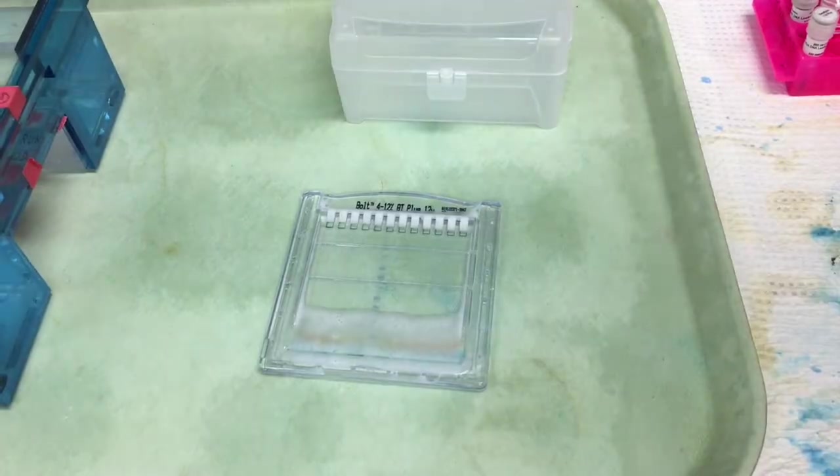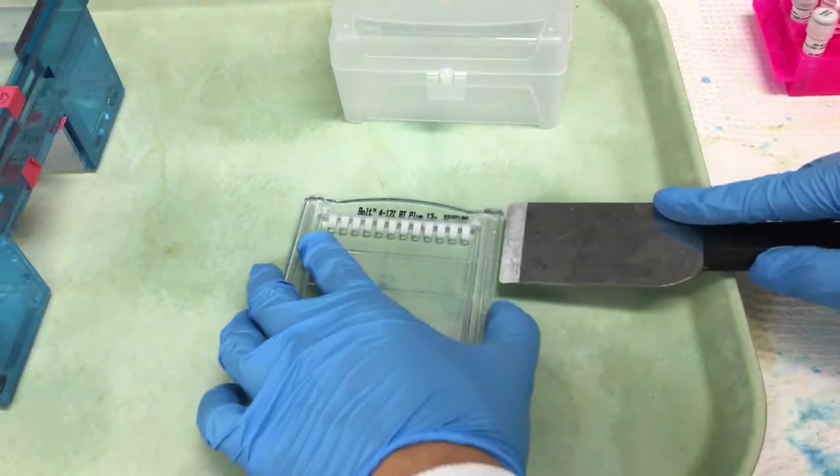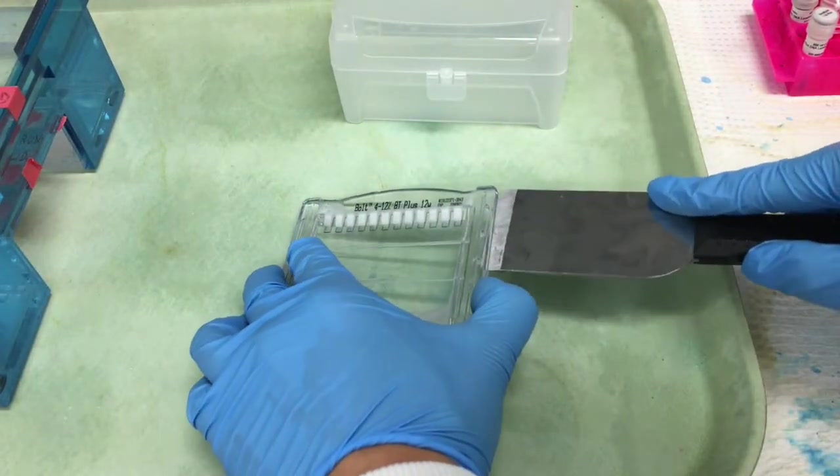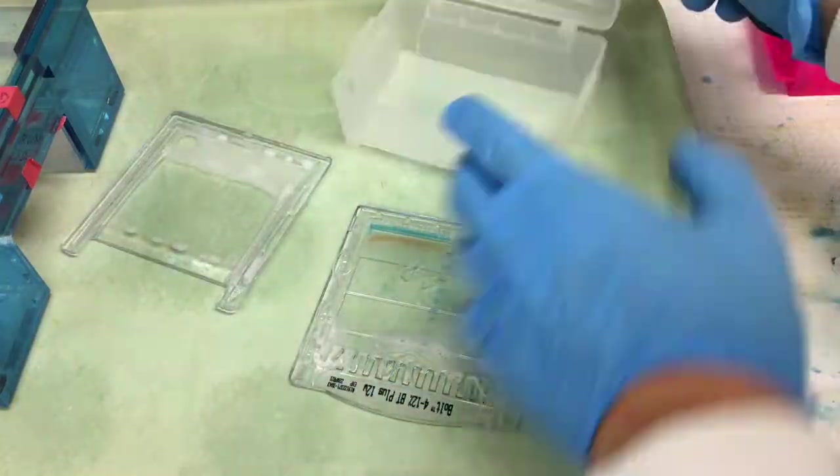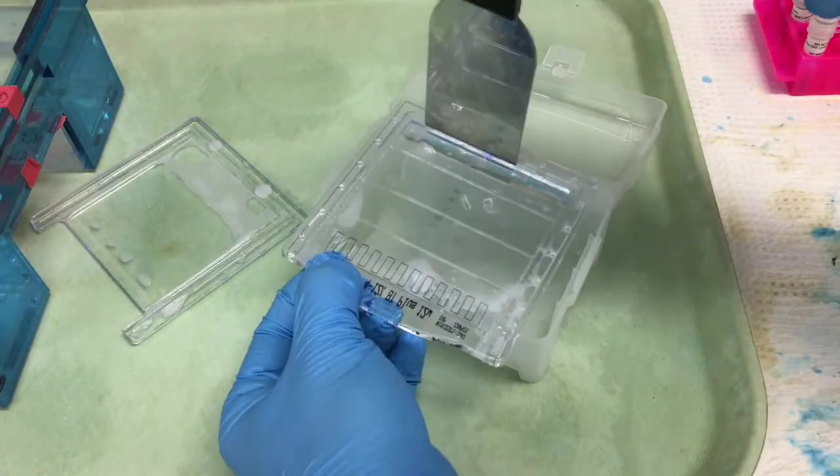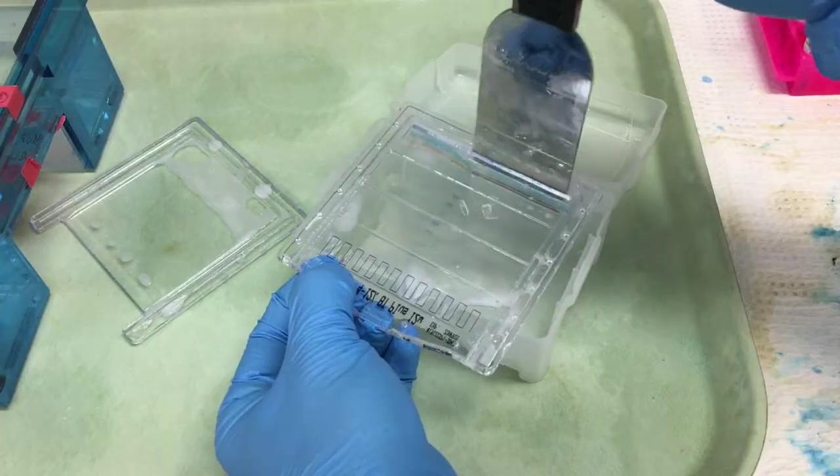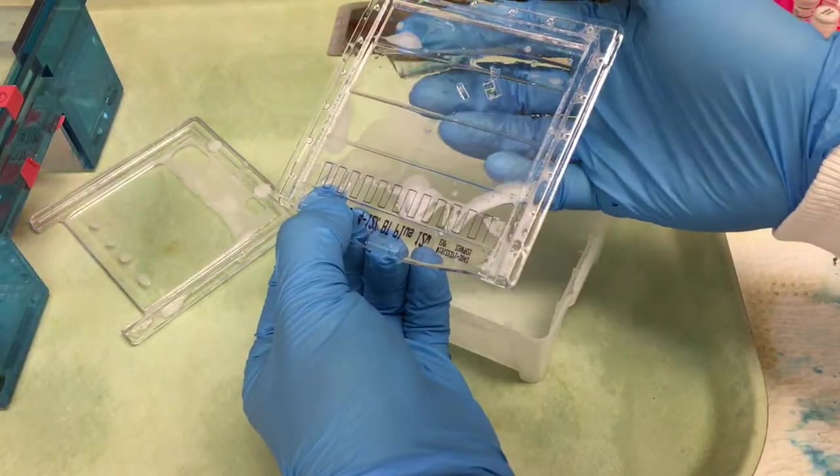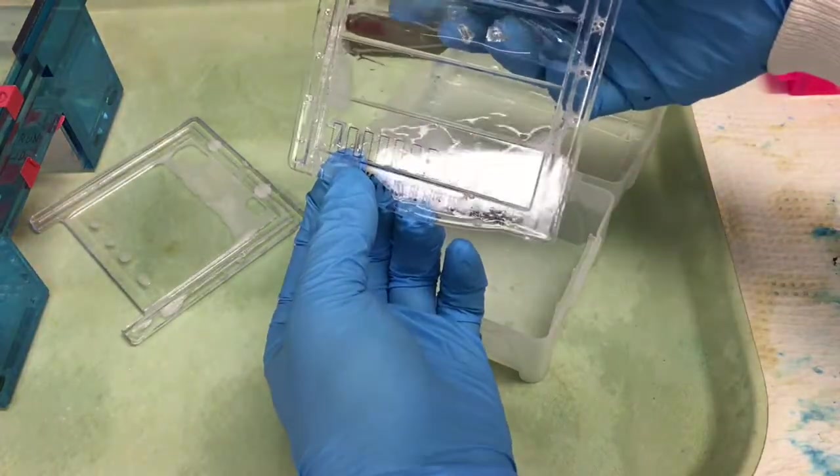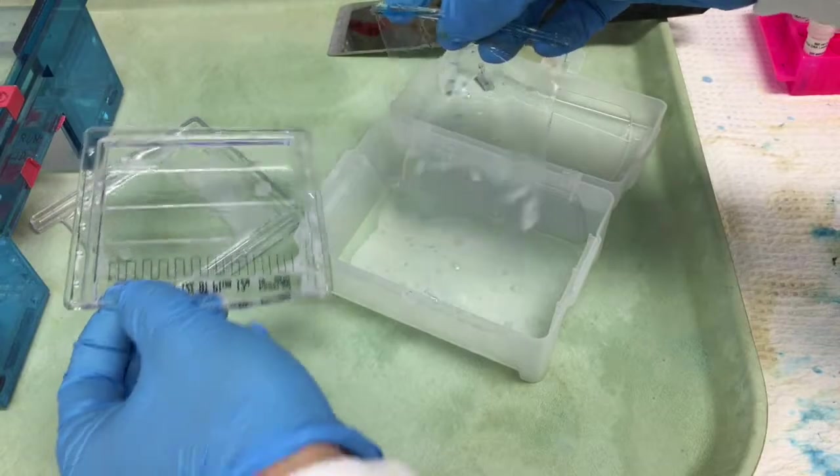When the run is complete, you can remove the gel from its casing. You may need to be careful about the orientation of the gel in case it becomes flipped and you get confused about the order of the samples, but it should be easy to tell by where you loaded the molecular weight marker.